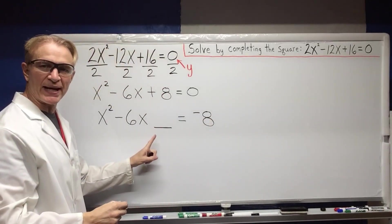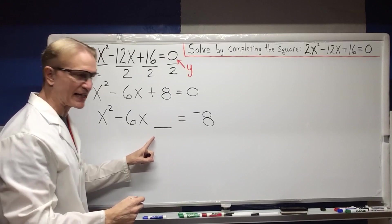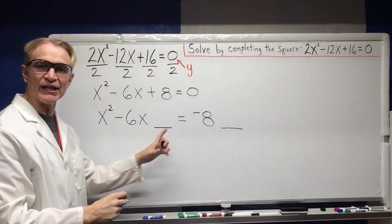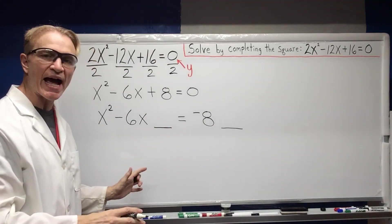Note, I'm leaving a space for the completing the square process. But since I'm going to add or subtract, I have to do it to each side. So I'm leaving a space on both sides.